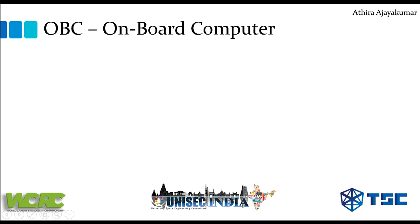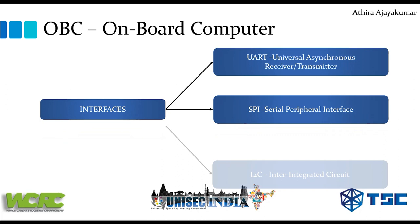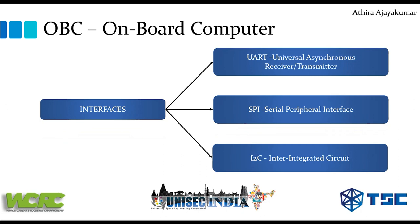There are other factors that decide which OBC to use. Sensors and other electronic components communicate to the computer through various interfaces such as UART (universal asynchronous receiver transmitter), SPI (serial peripheral interface), and I2C (inter-integrated circuit). Depending on the type of interface your sensor needs, you need to verify that interface is available on the computer. The speed at which data is transmitted differs for different interfaces, so keep this in mind while choosing the interface for your sensors.